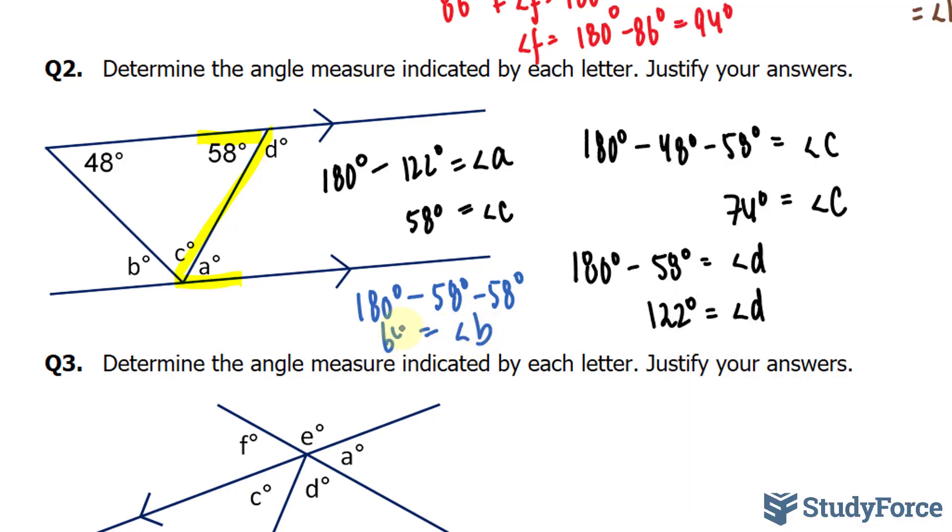Therefore, 180 minus 58 minus 58 is 64. Angle B is 64 degrees. Let me highlight all my findings. So this was B, this should be A, this is C, and this is D. Let's move on to question 3.